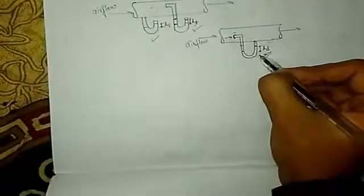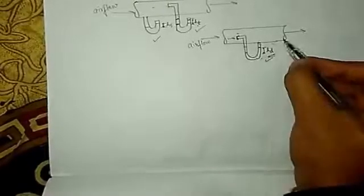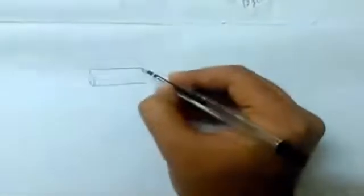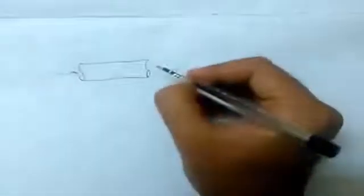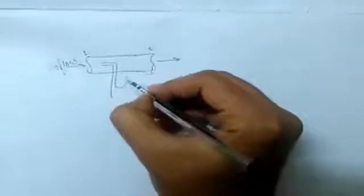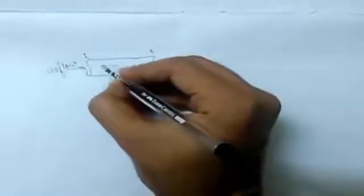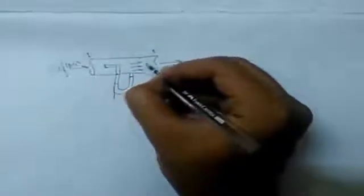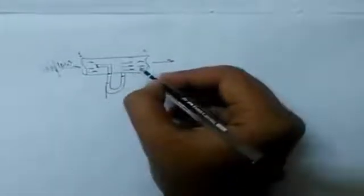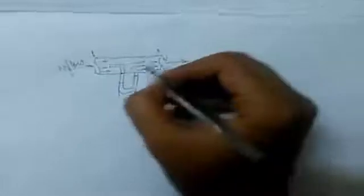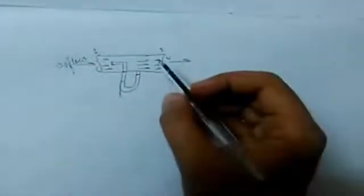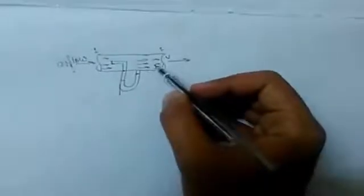Now if I apply Bernoulli's equation to this flow, I can obtain the velocity of the flowing fluid. Consider air flowing in this tube with velocity V. This flow has kinetic energy equal to one-half rho V squared. Consider point A at the stagnation end and point B at the free-stream end.